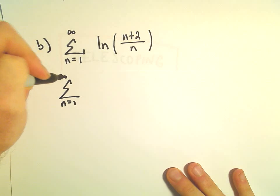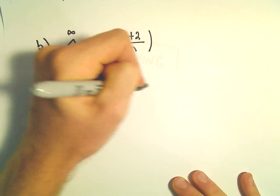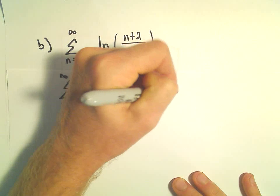But remember, we can use some properties of logarithms, and we can rewrite this as the natural logarithm of n plus 2 minus the natural logarithm of n.